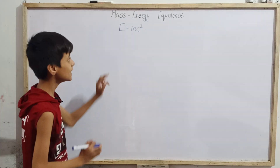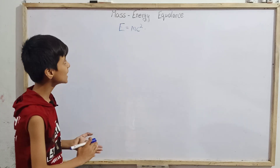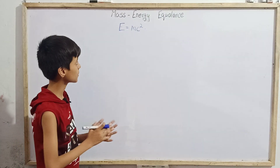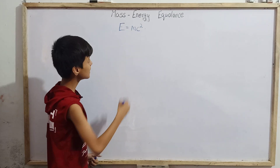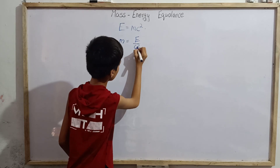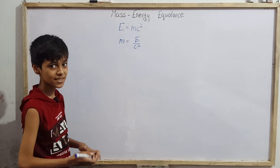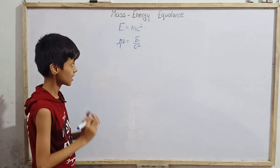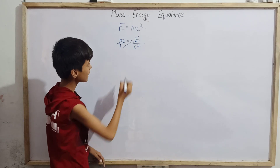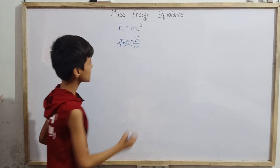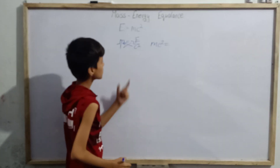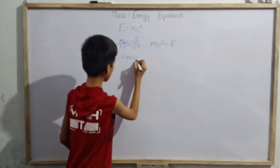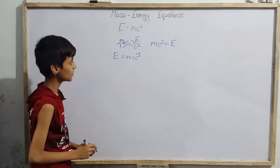Generally if you ask anyone, they will say E equals mc². But let me tell you the reality: Einstein in 1905, in his special theory of relativity paper, actually patented a different equation. The real equation was m equals E divided by c². Later, scientists did cross-multiplication — m over 1 equals E over c² — and rearranging gives mc² equals E, so E equals mc².